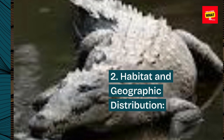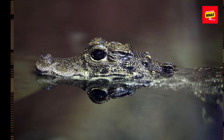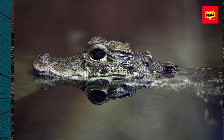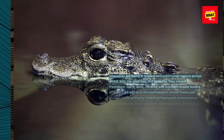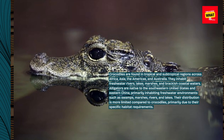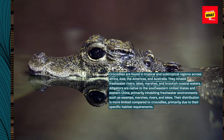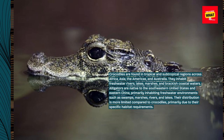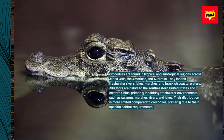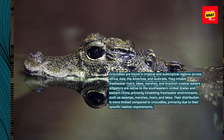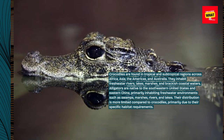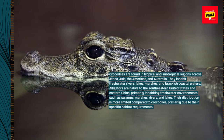Habitat and Geographic Distribution: Crocodiles are found in tropical and subtropical regions across Africa, Asia, the Americas, and Australia. They inhabit freshwater rivers, lakes, marshes, and brackish coastal waters. Alligators are native to the southeastern United States and eastern China, primarily inhabiting freshwater environments such as swamps, marshes, rivers, and lakes. Their distribution is more limited compared to crocodiles, primarily due to their specific habitat requirements.